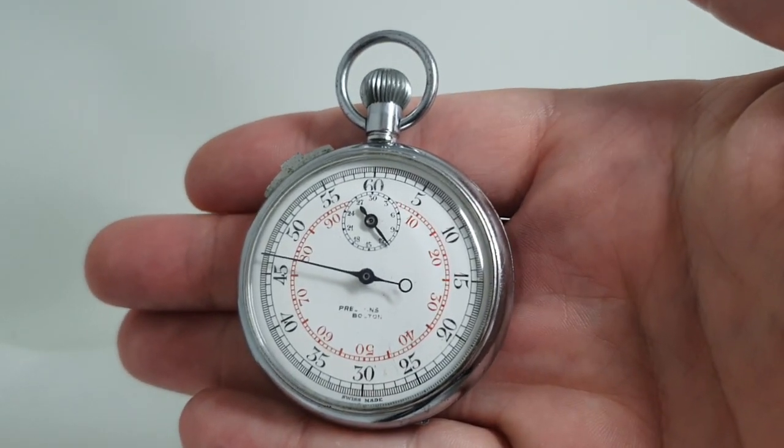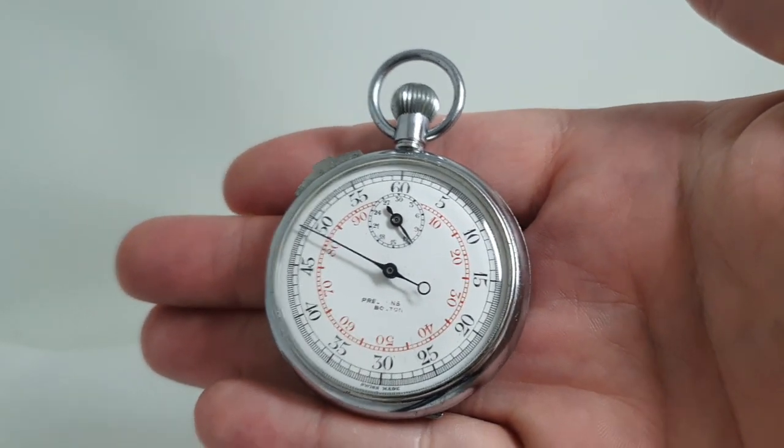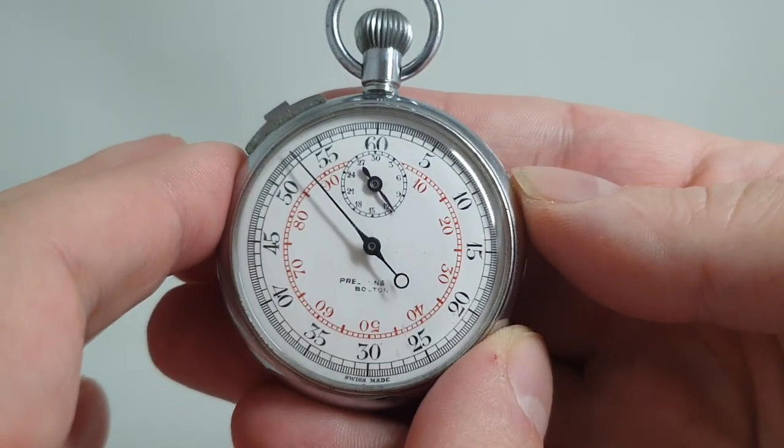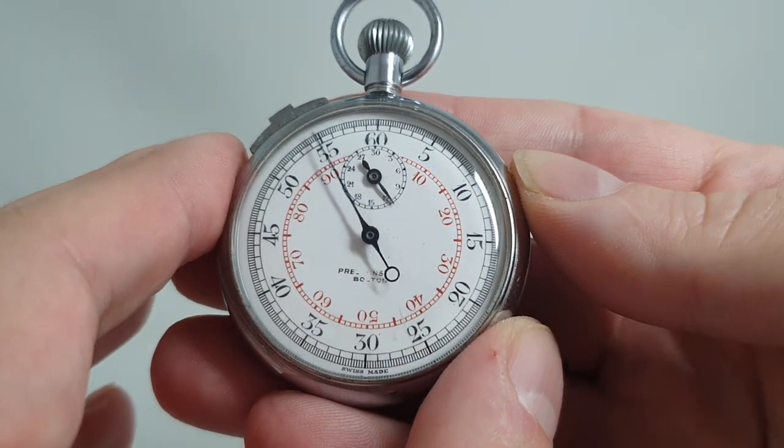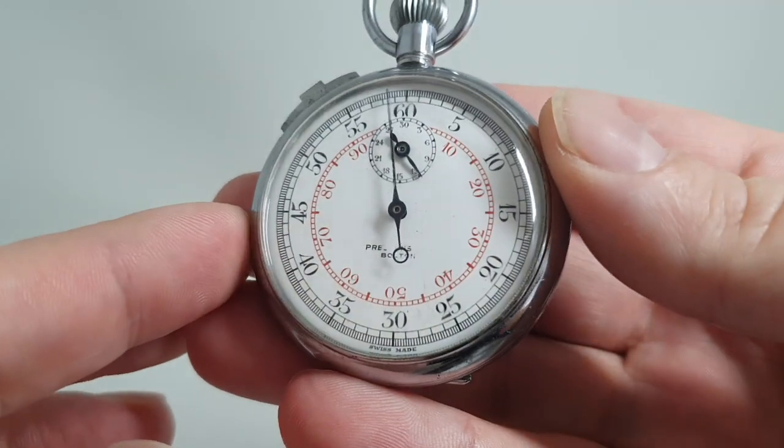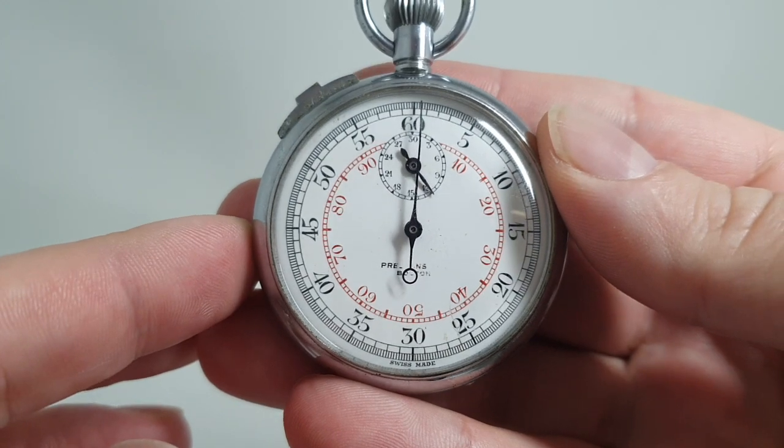Hello watch fans! Birth year watches here and this time for you we have a circa 1955 stopwatch from Preston's of Bolton. You can see their name just at the bottom of the dial there, some of it has rubbed off but it's still there.